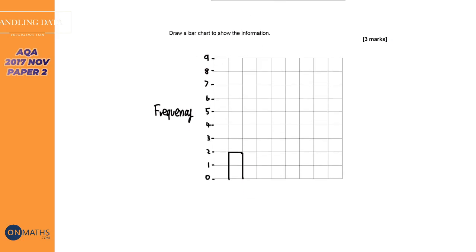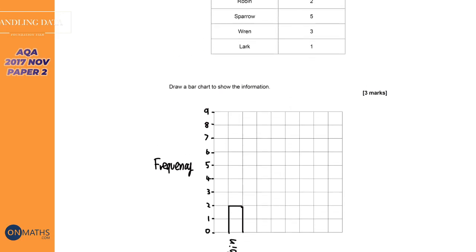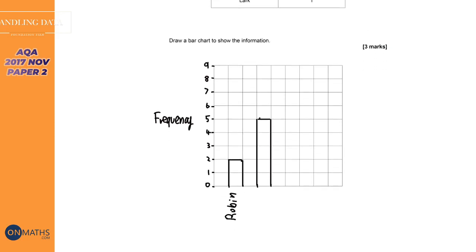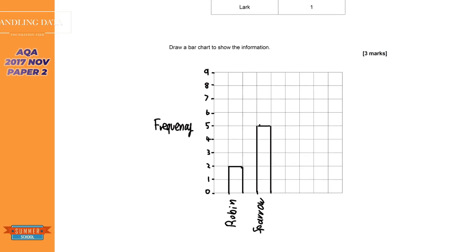So we've got Robin. So we've got to label that. Now I think the exam does allow you to just write R, but I'm not going to chance it. So I'm just going to label Robin there. Next one is Sparrow, which is 5. So let's mark it out, which will be that one and that one. So we've got to leave a space. And I said 5. Let's put it up to 5. And it's Sparrow. Looks good to me.